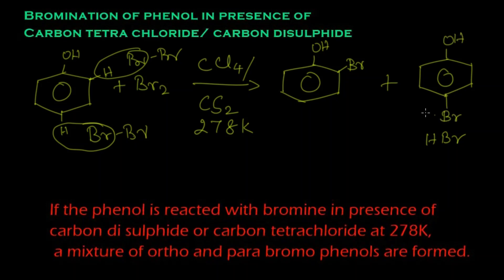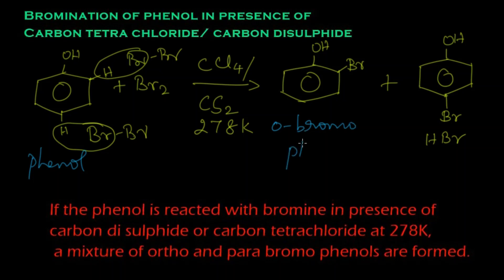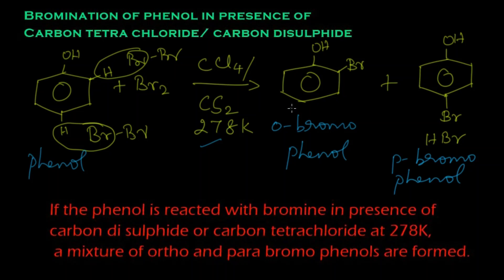To summarize: phenol reacts with bromine in the presence of carbon tetrachloride or carbon disulfide at 278 Kelvin to give a mixture of orthobromophenol and parabromophenol. A mixture of ortho and para bromophenols are obtained.